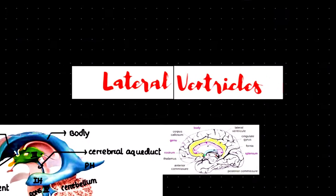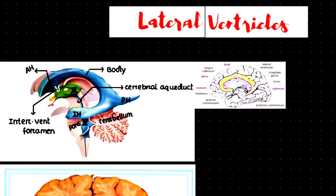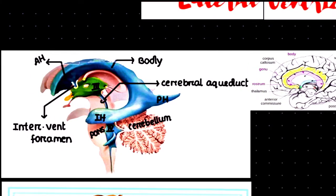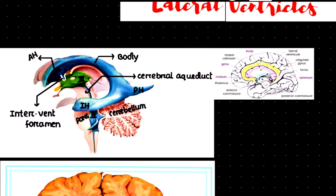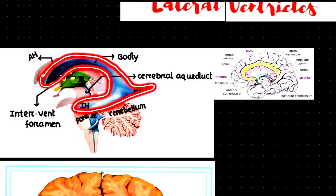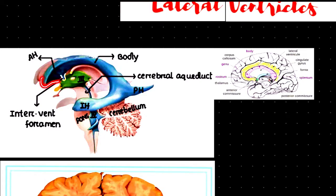Lateral ventricles are two in number — one on the right side and one on the left side. Lateral ventricles are the cavity of the telencephalon, or cerebral hemisphere. In the sagittal section, we can identify the lateral ventricles, the third ventricle, and the fourth ventricle.